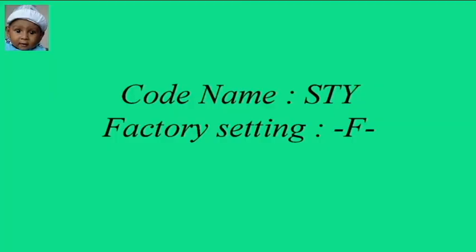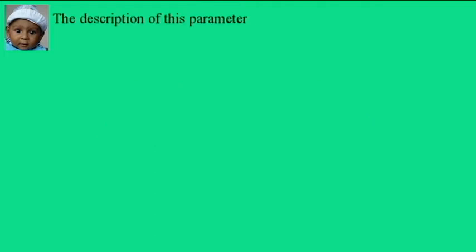Parameter STY is the selection of the type of stop and the setting range is DBF. Three types of stop are possible.